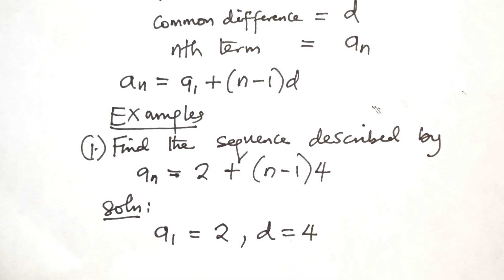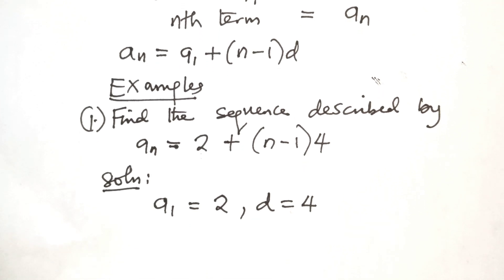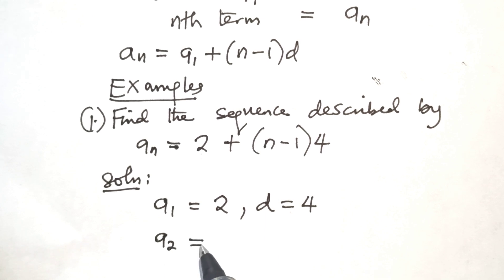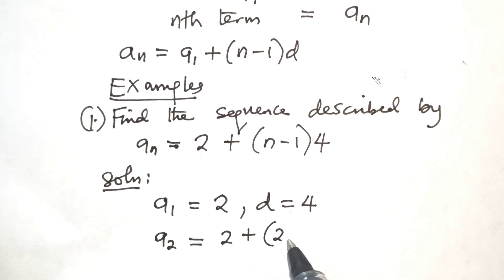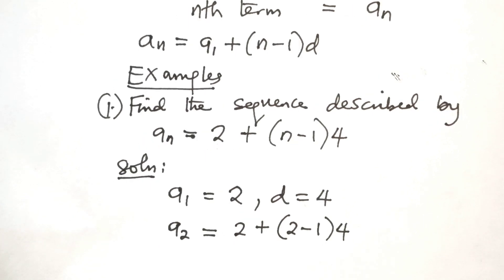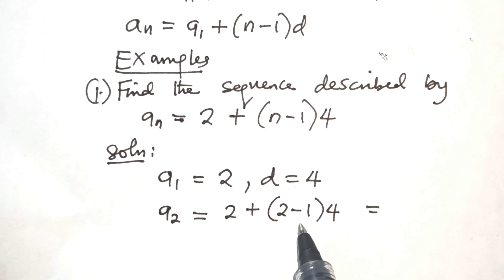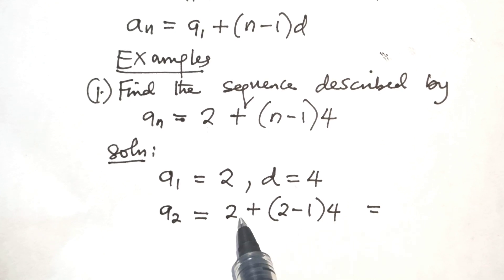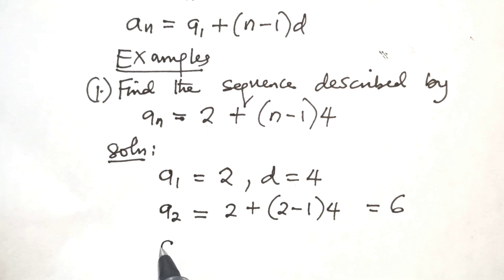Then, let's get the second term. Since we already have the first term, we can get the second term. A2 equals 2 plus 2 minus 1 multiplied by 4. 2 minus 1 is 1. 1 times 4 is 4 plus 2 is 6. So the second term is 6.